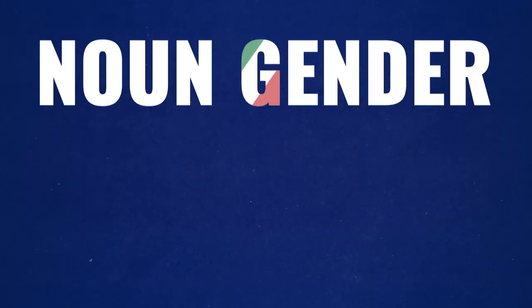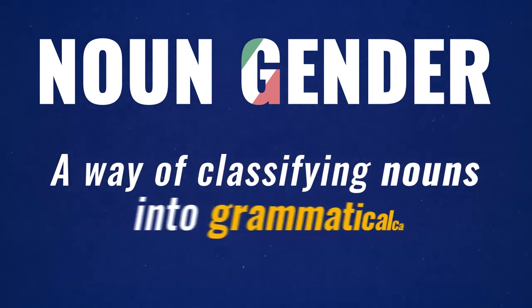For these really common nouns it's simply a matter of memorizing their gender by learning them with the correct article. Another important thing is to remember what noun gender is actually all about — we did a whole video on the what, why, and how of noun gender. Basically, noun gender is a way of classifying nouns into grammatical categories based on how they behave grammatically and what effect they have on the sentence and the words that refer back to them. This is especially helpful for nouns ending in E.